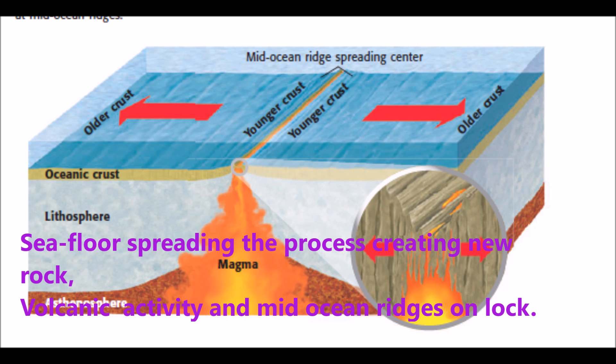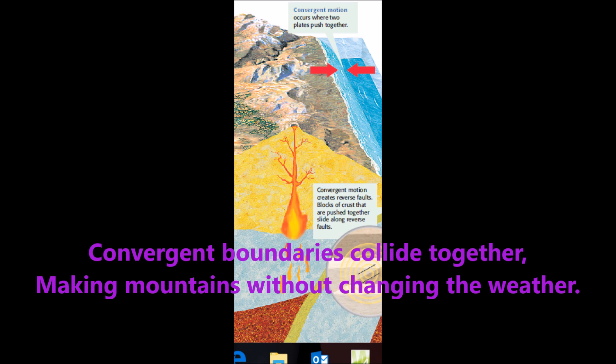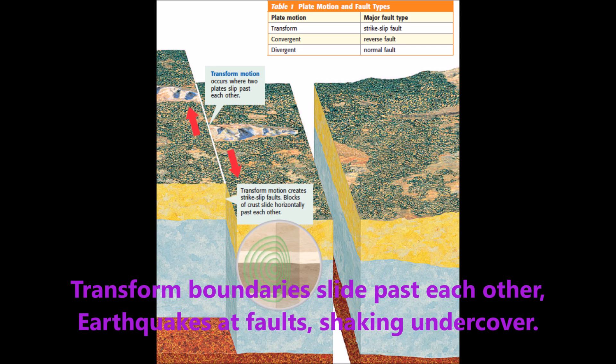Sea floor spreading is the process creating new rock — volcanic activity and mid-ocean ridges unlock. Divergent boundaries pull plates apart; that's how volcanic islands get their start. Converging boundaries push plates together, making mountains without changing the weather. Transform boundaries slide past each other — earthquakes at faults, shaking undercover.